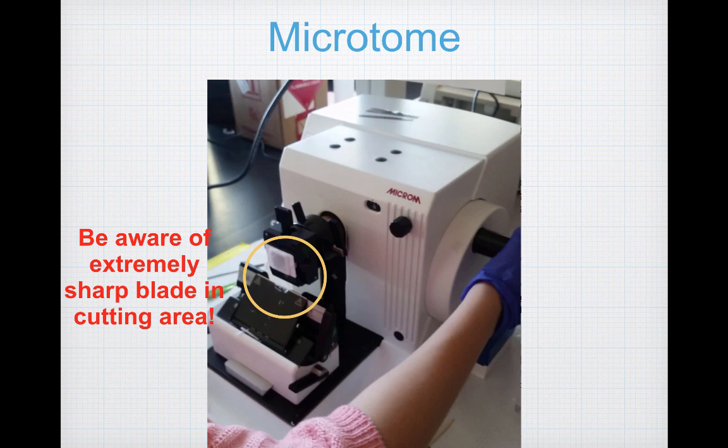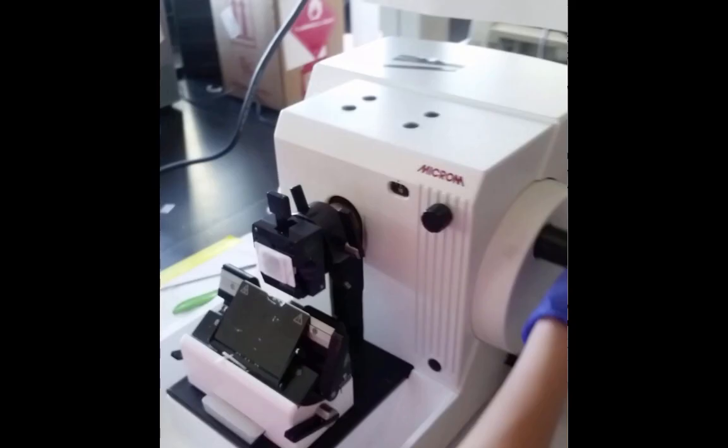It is very important to remember: do not become distracted when using the microtome. There is a major risk of injury from the extremely sharp blade located in the cutting area indicated by the yellow circle. Do not put your fingers near that area. Don't worry — you will be assisted when you use the microtome for the first time.